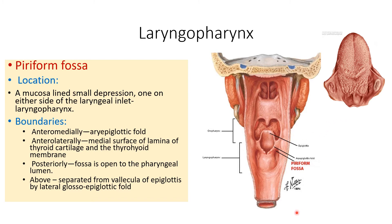What is the vallecula? The tongue has an anterior two-thirds and a posterior one-third, with the inverted V-shaped sulcus terminalis demarcating the two components, in front of which are the circumvallate papillae. The upper part of the epiglottis is connected to the tongue in the midline by the median glossoepiglottic fold, and laterally by two lateral glossoepiglottic folds. The space between the median glossoepiglottic fold and the lateral glossoepiglottic fold is the vallecula.